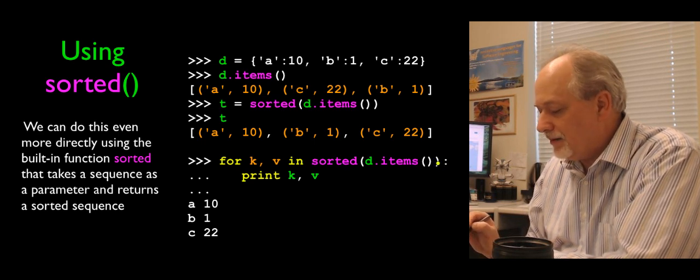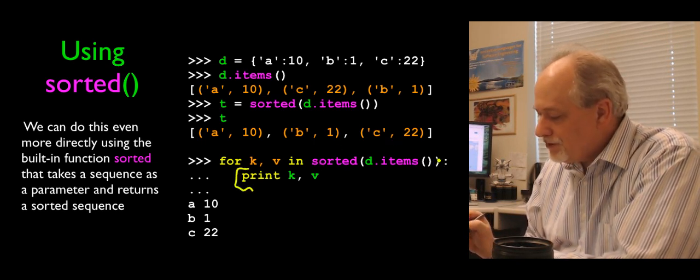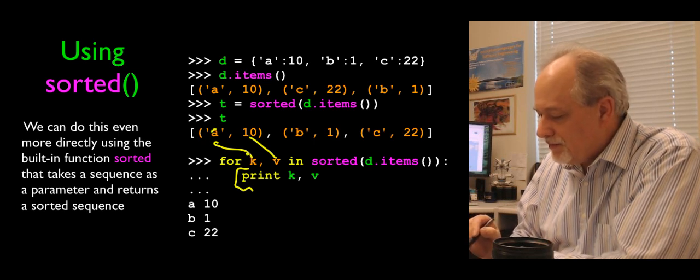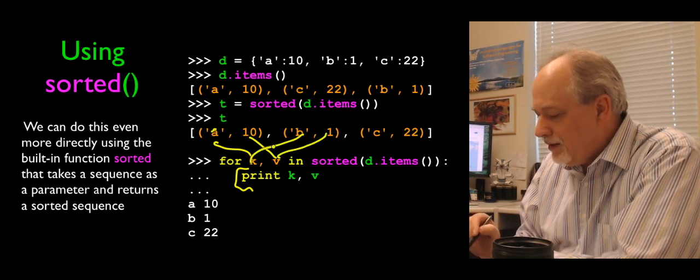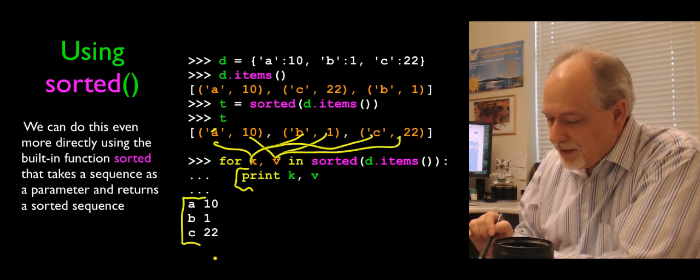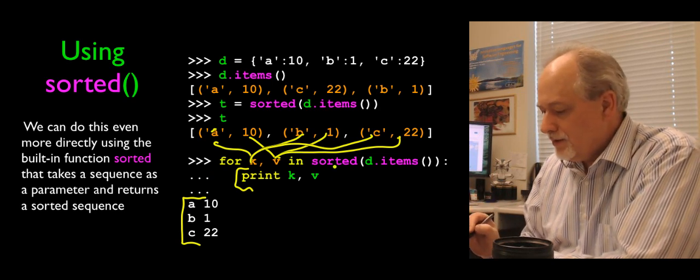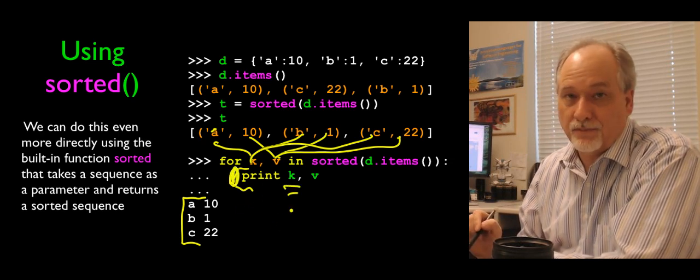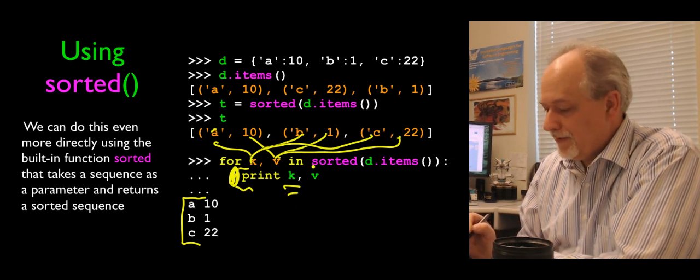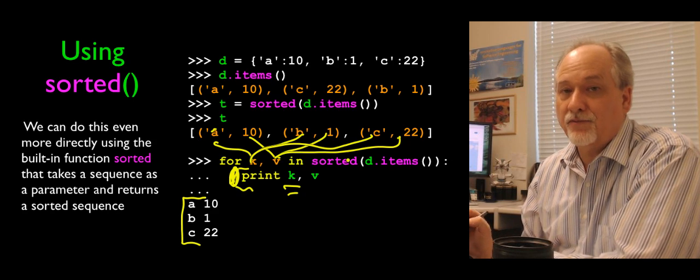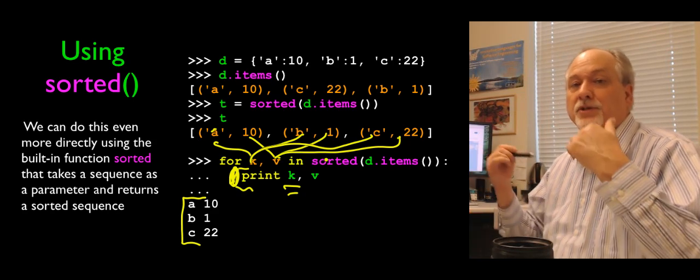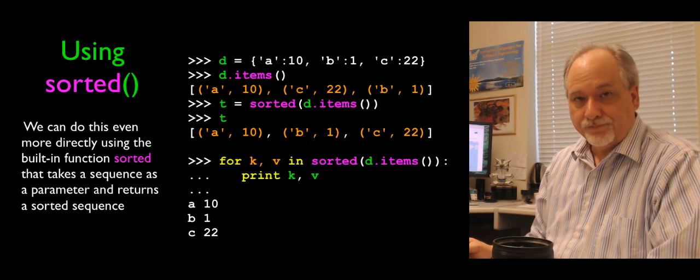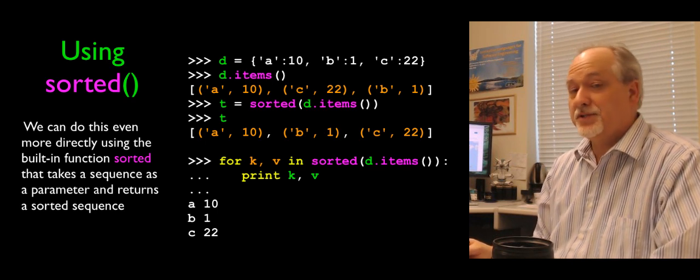And we can combine all this into one nice little for statement, where we say for k, v in sorted of d.items. So this is now going to first sort the key value pairs by key. And then k, v is going to run through them. So k is going to be A, 10. Then k is going to be B, v is going to be 1. k is going to be C, v is going to be 22. So now we've printed these things out in alphabetical key order. So by adding sorted to d.items, that means that this loop is going to run in key sorted order. And that's because sorted takes an unsorted list as input and returns a sorted list.